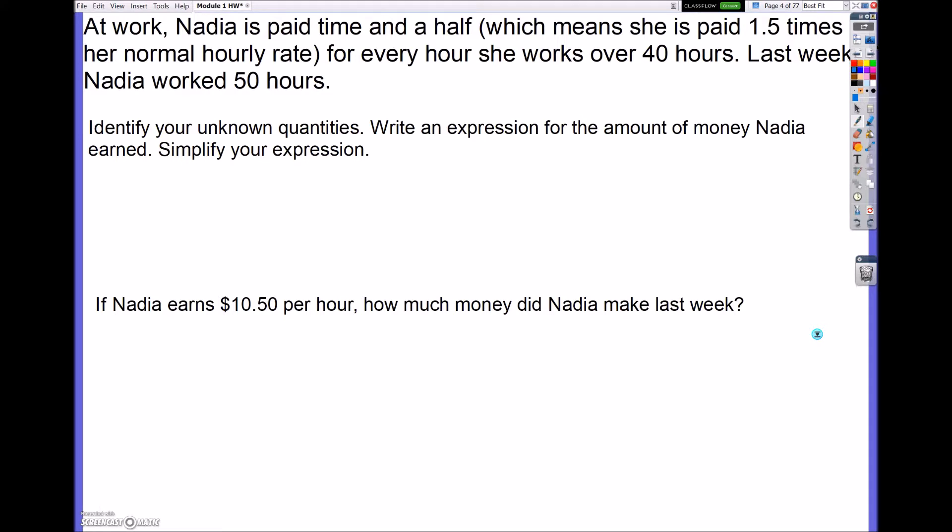So let's go over exactly how this works. So it says at work, Nadia is paid time and a half, which means she's paid 1.5 times her normal hourly rate, for every hour she works over 40 hours. Last week Nadia worked 50 hours. Identify the unknown quantities. Well, I don't know how much she makes per hour, so that's my unknown quantity, how much she makes per hour.